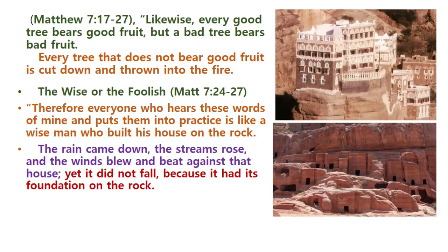Another Bible passage, Matthew chapter 7, verses 17 to 27 — also a word about judgment. Likewise, every good tree bears good fruit, but a bad tree bears bad fruit. Every tree that does not bear good fruit is cut down and thrown into fire. Therefore, everyone who hears these words of mine and puts them into practice is like a wise man who built his house on the rock. The rain came down, the stream rose, and the winds blew and beat against that house, yet it did not fall, because it had its foundation on the rock.